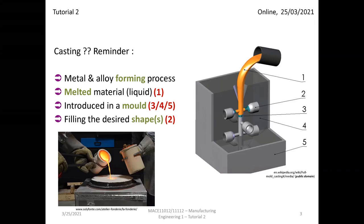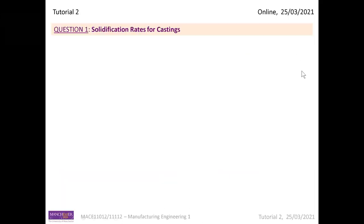One of the huge advantages of casting is that the final cast can be a complex shape. You can cast from simple shapes like ingots to very complicated forms. You can have a casting assembly like the one on the right, which can be a number of parts at the same time, or it could be a single item. Let's now move to the questions.